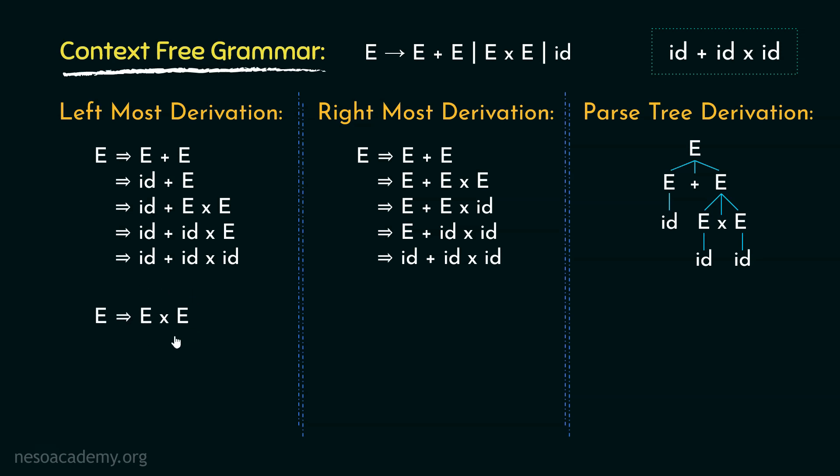Now this is leftmost derivation procedure, so we will be concerned about the leftmost variable, which in this case is this one. Now observe the string. We have acquired the multiplication operator and now we need the addition operator, right? So this time we will use this production, that is E can be written as E + E.